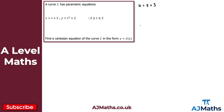Making t the subject gives us t equals x minus 3. We now substitute this into the equation for y. So y equals t squared becomes y equals x minus 3, all squared, and don't forget the plus 2. So y equals x minus 3, all squared, plus 2.